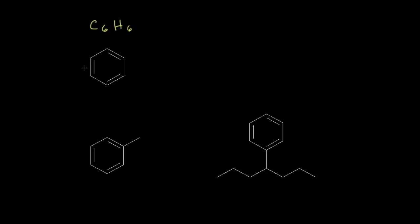This is one possible dot structure for benzene, but the double bonds don't have to be drawn in that position. We can actually show a resonance structure for benzene by moving these electrons over, pushing these electrons over, so the pi electrons shift positions. Either one of these Kekulé structures is an acceptable dot structure for benzene.